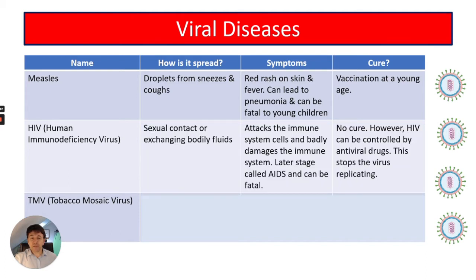HIV, or human immunodeficiency virus, is spread by sexual contact or exchanging bodily fluids. It attacks immune system cells, badly damaging the immune system. The later stages are called AIDS and can be fatal. There is no cure, but HIV can be controlled by antiviral drugs, which stop the virus from replicating.